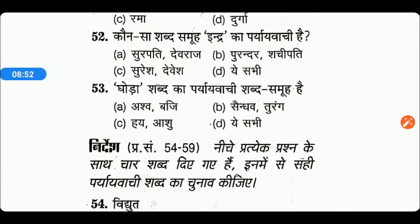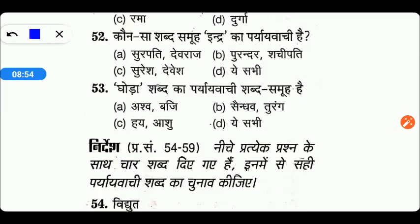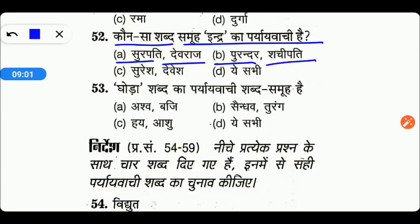Next आते हैं friends. यहाँ पर हमसे पूछा गया है कि कौन सा शब्द युग्म इंद्र का पर्यायवाची है? Options are सुरपति, देवराज, पुरंदर, सचीपति, सुरेश, देवेश, या ये सभी। तो friends, यहाँ पर D right answer है — ये सारे ही नाम इंद्र के पर्यायवाची हैं।